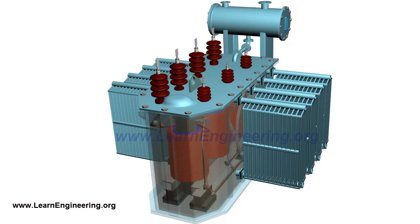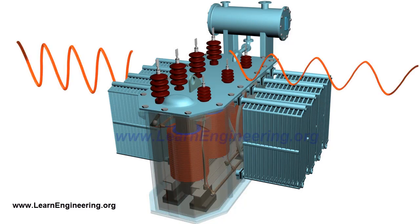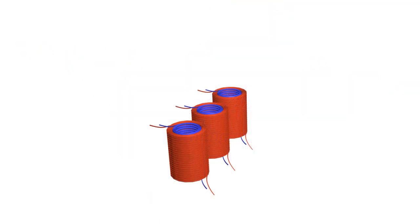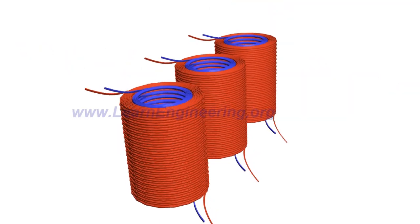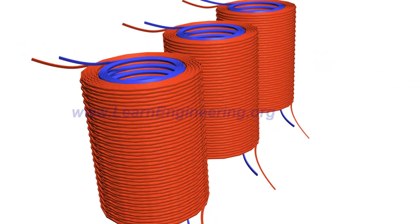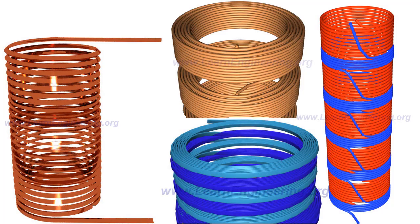Transformer windings transform electrical power of one voltage to another voltage. In this way, they act as the heart of the transformer. Depending upon the power rating and application of the transformer, different types of windings are employed.